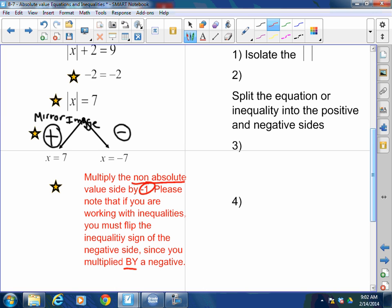Please note that if you're working with inequalities, you must flip the inequality sign of the negative side since you multiplied by a negative 1. So my positive side is the mirror image. My negative side, I find that by multiplying the non-absolute value side by negative 1. So in this case, the non-absolute value side was the 7. I multiplied 7 by a negative 1, giving me x = -7. So my solutions here are x = 7 and x = -7.